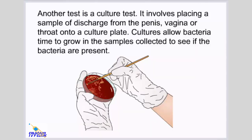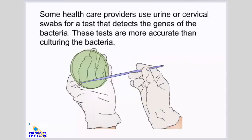Another test is a culture test, which involves placing a sample of discharge from the penis, vagina, or throat onto a culture plate. Cultures allow bacteria time to grow in the collected samples to confirm if the bacteria are present. Some healthcare providers use urine or cervical swabs for a test that detects the genes of the bacteria, which is more accurate than culturing.